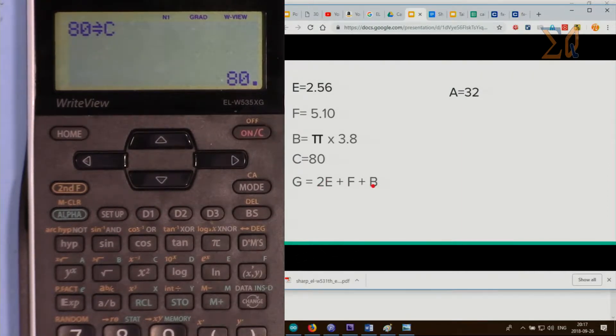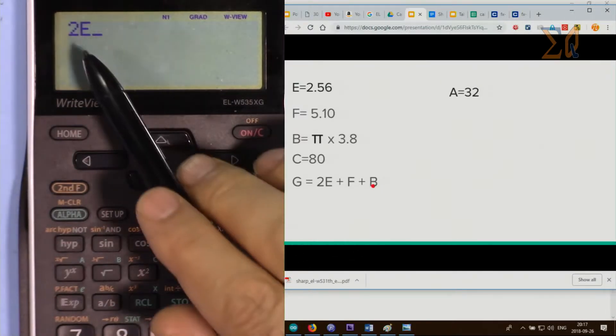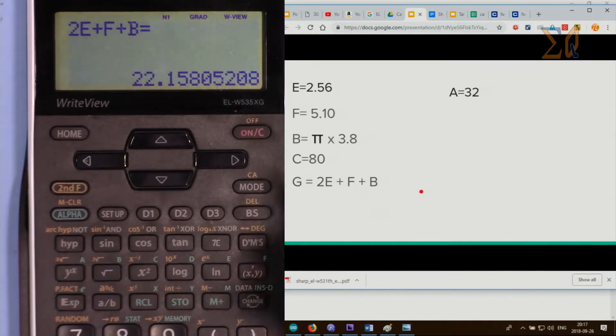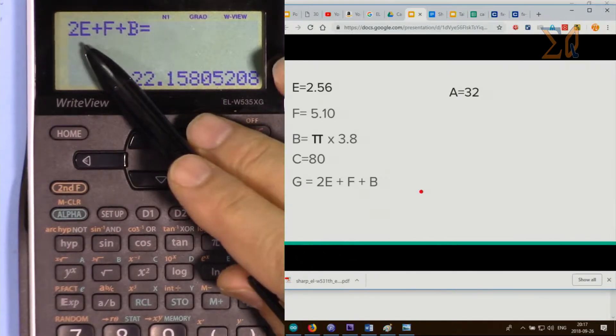In order to use them, press 2 and then recall E. You will see 2E the way that you want it, plus recall F, plus recall B. This is the result of a calculation of all those values: 2 multiplied by E plus value of F and value of B.